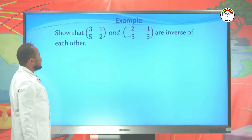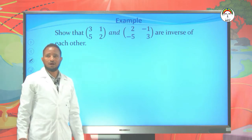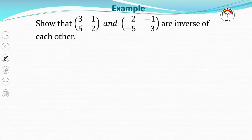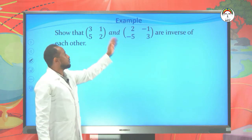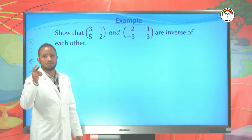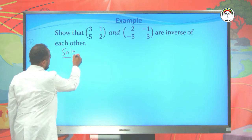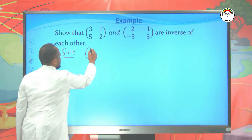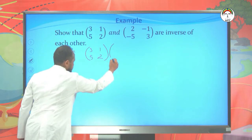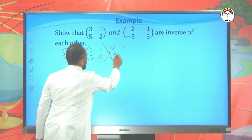Now let's see this example. It says: show that these two matrices are inverses of each other. To check this, if one matrix is the inverse of the other, then the product of these two matrices must give us the identity matrix of order 2 by 2. The first matrix is [3, 1; 5, 2] and the second is [2, -1; -5, 3].